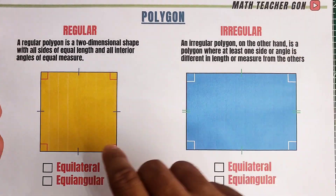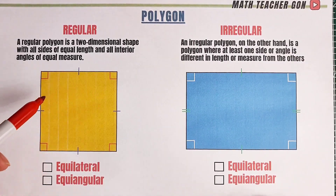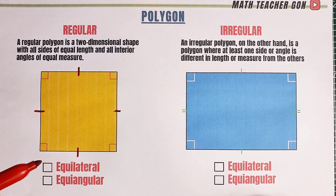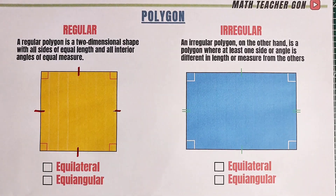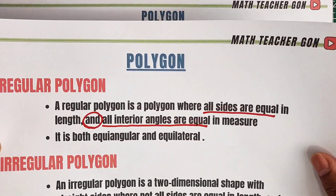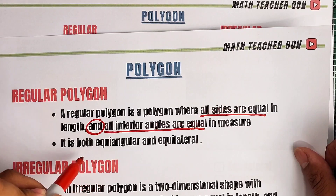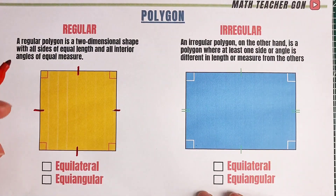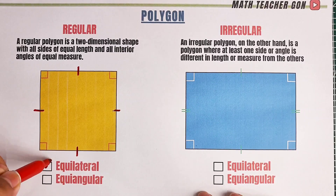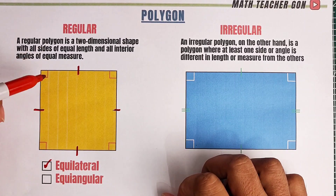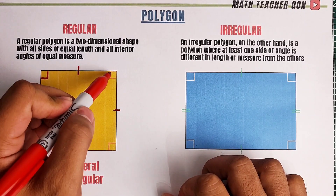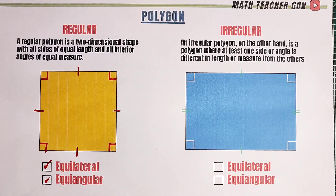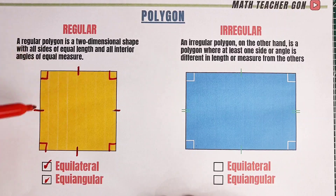Let us see why this polygon is regular and this one is irregular. This one is a square. As you can see, we have four sides and all of them have the same markings, meaning they are all equal — it's equilateral. Now let's look at the interior angles. We have the same markings here, meaning each angle is 90 degrees, so all the angles are equal — meaning it's equiangular. If both of these characteristics are met, meaning this one is a regular polygon.